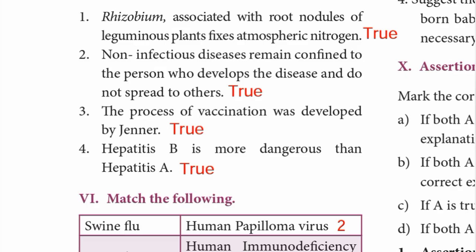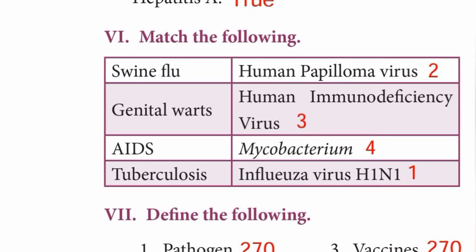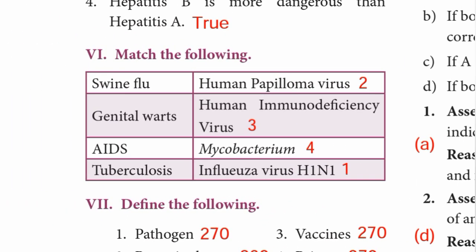Roman number six: Match the following. Swine flu — Influenza virus H1N1. Genital warts — Human Papilloma Virus. AIDS — HIV, Human Immunodeficiency Virus. Tuberculosis — Mycobacterium. The matching order is 2, 3, 4, 1.